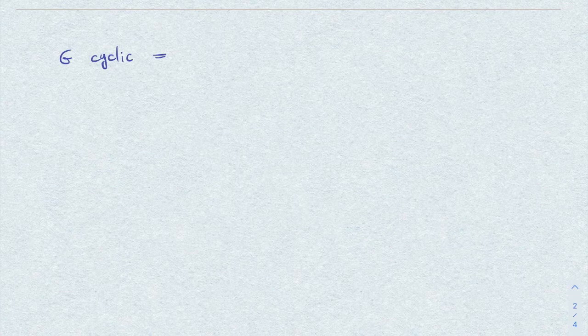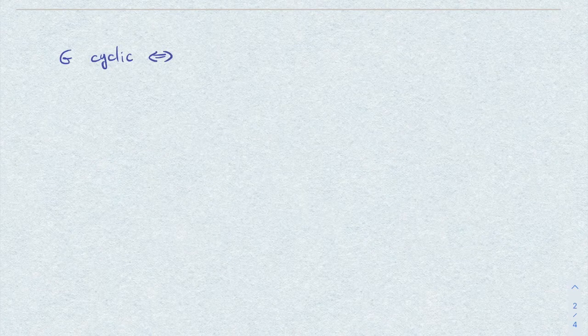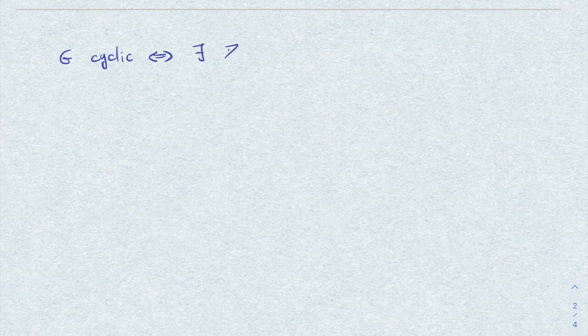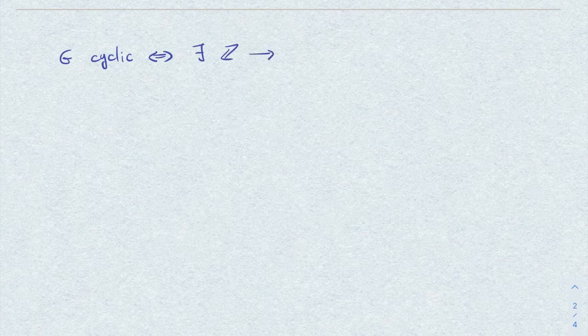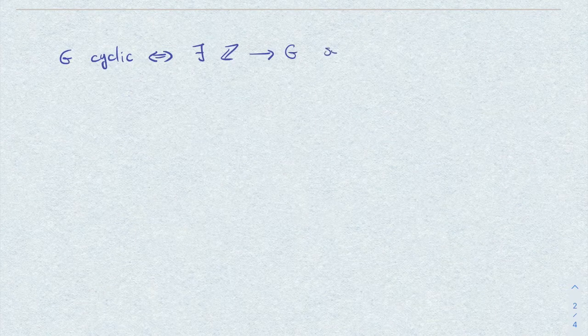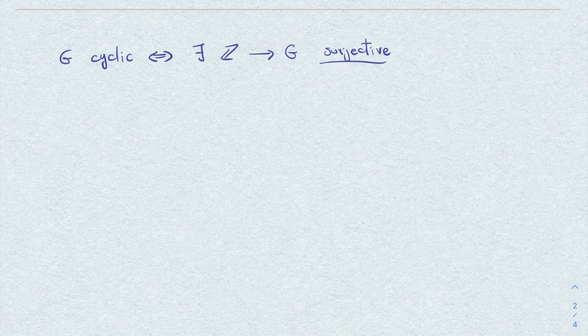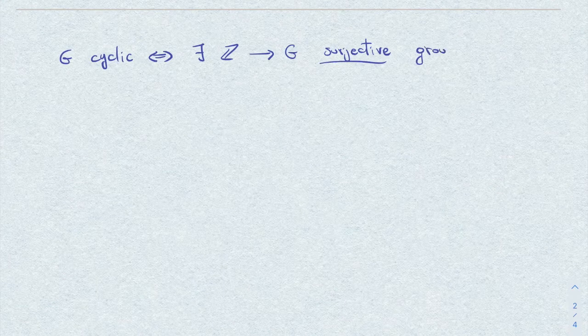So now let's come to the problem that I want to discuss today. A group G is cyclic if and only if there exists a surjective morphism of groups.